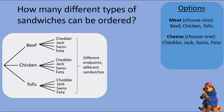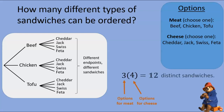How many endpoints are there? There are three groups of four, so there are twelve endpoints and thus twelve sandwiches. Or, laid out more directly: we have three options for meat, each of which leads to four options for cheese, and so we can have twelve distinct sandwiches altogether.